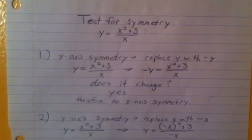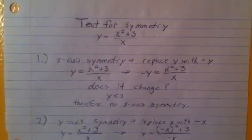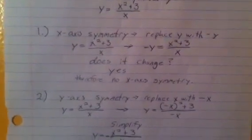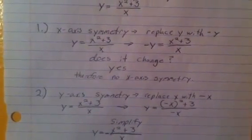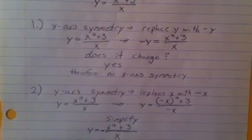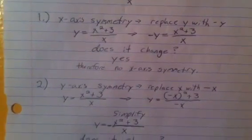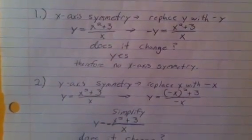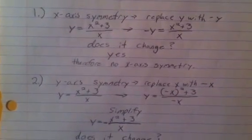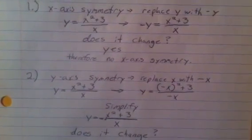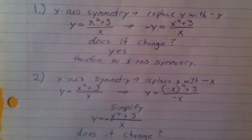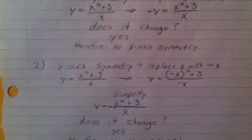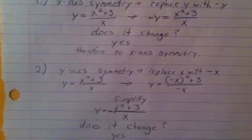Test for symmetry in the equation y equals x squared plus 3 over x. First, we will test for x-axis symmetry by replacing y with negative y. So in the equation y equals x squared plus 3 over x, we get negative y equals x squared plus 3 over x. Since the y has become a negative y, yes it has changed, therefore there is no x-axis symmetry.